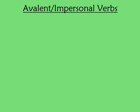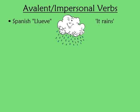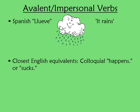Can a verb have a valency of zero? Yes, but not in English. In Spanish, if it's raining outside, you can just say 'llueve,' which literally means 'rains' — there's absolutely no subject or object, and this is totally grammatically okay. In English this would be non-standard, but you could maybe have avalent expressions in some colloquial phrases, such as 'happens' or 'sucks,' though you would really only use this in an informal situation.